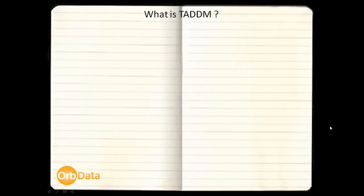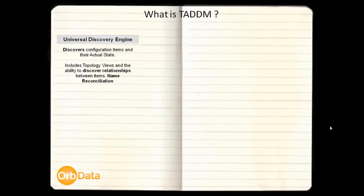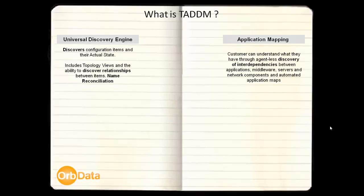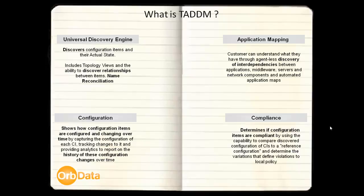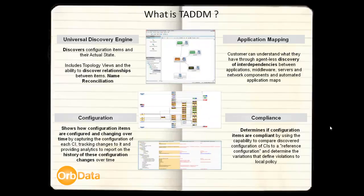We now have a little understanding of configuration management and how TADM can help, but what is it? TADM is IBM's strategic discovery tool and provides visibility to what you have, how it is configured, and how it is changing over time. With TADM, a customer can discover what they have in their data centers, including servers, applications, network devices, and operating systems.